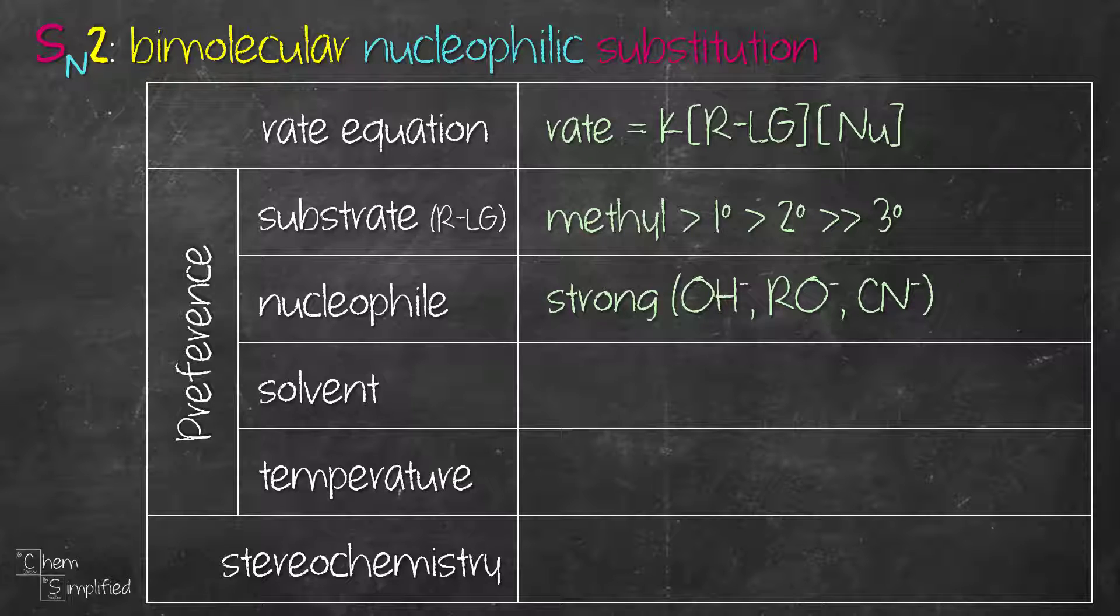As for the solvent, polar aprotic solvents like acetone, acetonitrile, or DMF are preferred. They are polar enough to dissolve the substrate and nucleophile but will not hydrogen bond with the nucleophile.